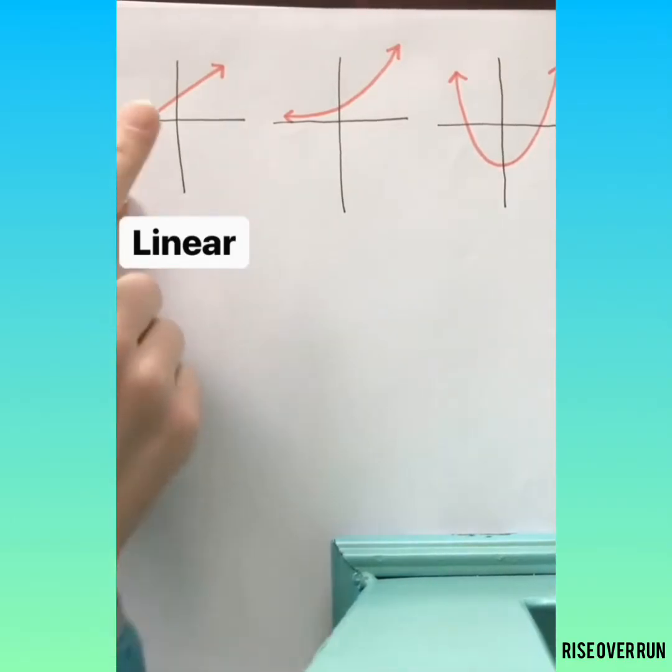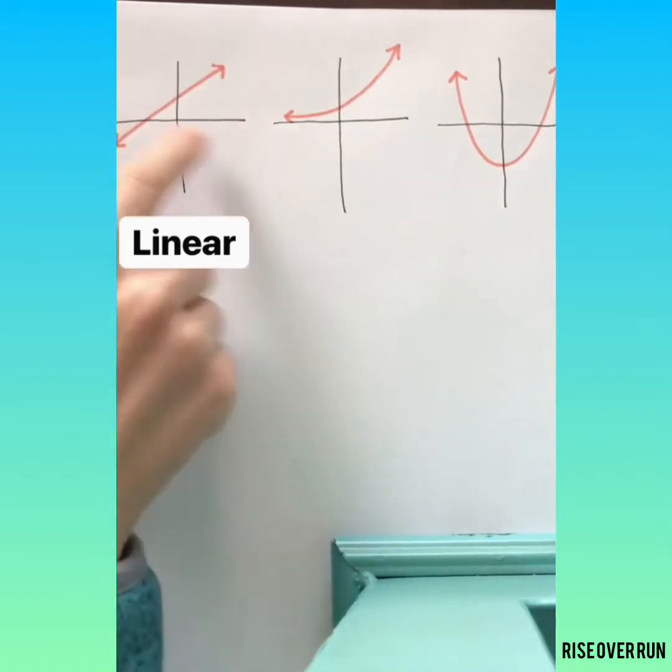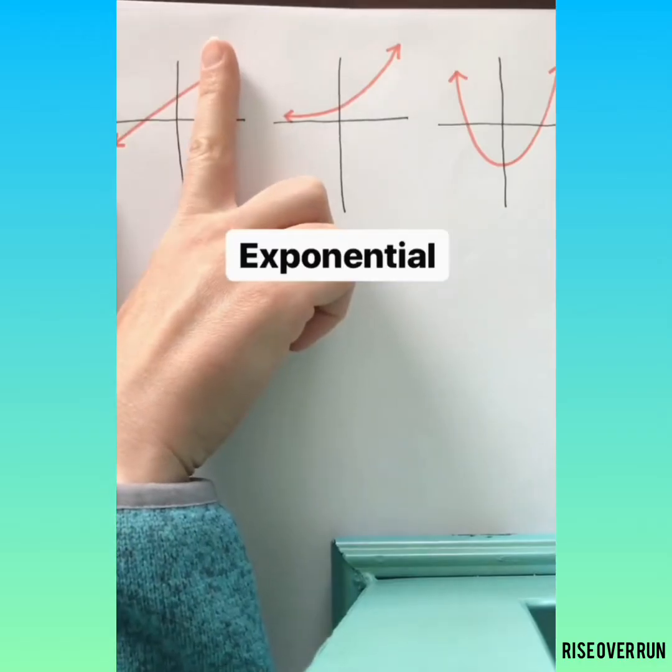If you're looking at a graph, linear functions will always be a straight line. They can go in any direction. You just won't see a vertical line because then it won't be a function.